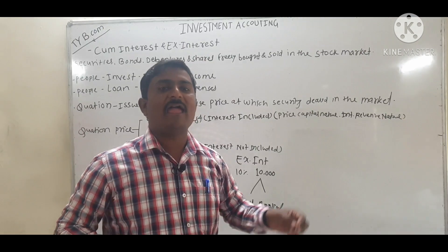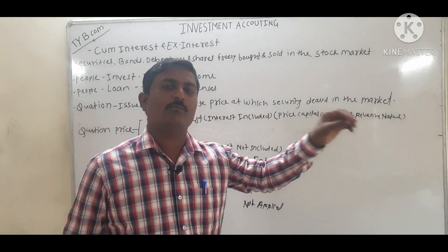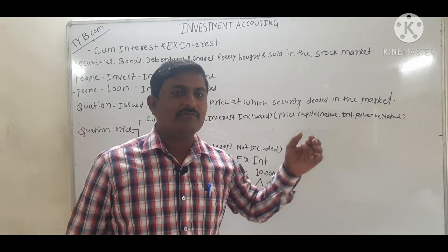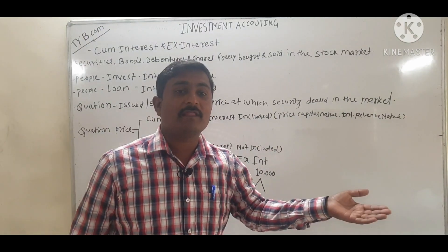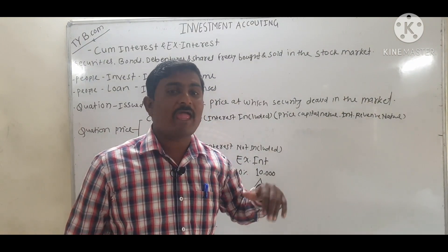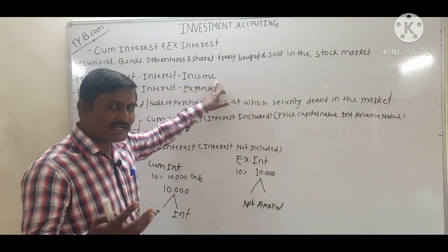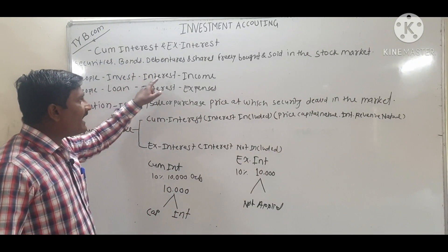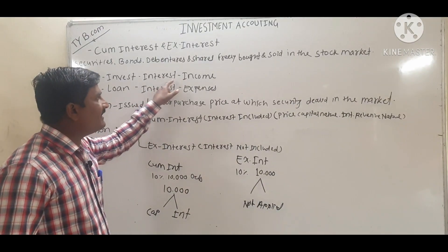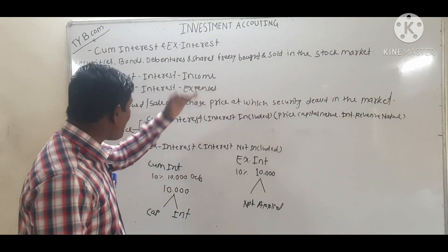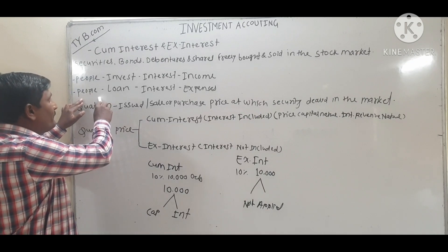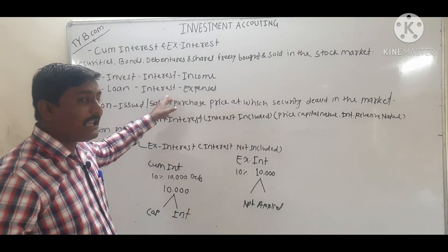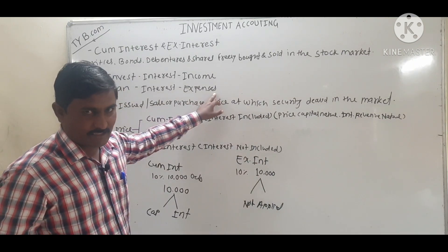When people invest their money into a particular security, they get interest or dividend — this is their income. For example, if I invest in Tata Motors shares, I receive dividend. If I invest in Glenmark company debentures, I enjoy interest. On the other hand, when people take a loan and pay interest, that is an expense.